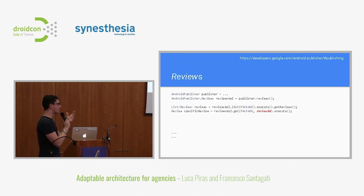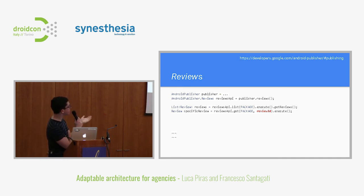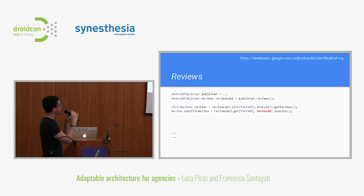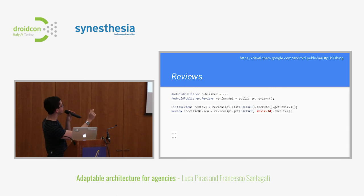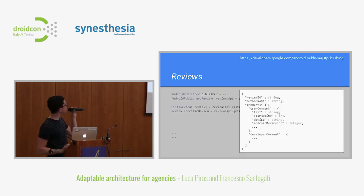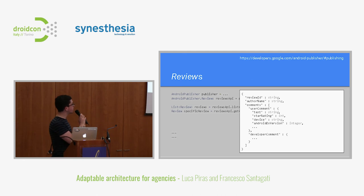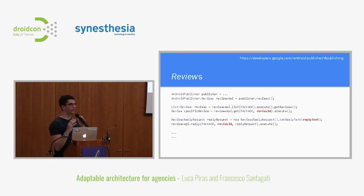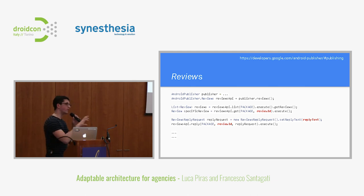For the Reviews API — this is new, they added it this year. It works just like the others: you access the reviews resource and you can list the reviews based on your package, or get a single review by ID. The attributes you have access to include author name, review ID, and comments. You can also reply to those reviews. At SoundCloud we haven't done this yet, but it's on our roadmap to build a bot where we could reply to reviews via Slack, which would be great.